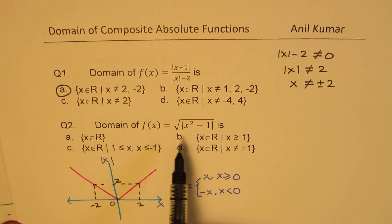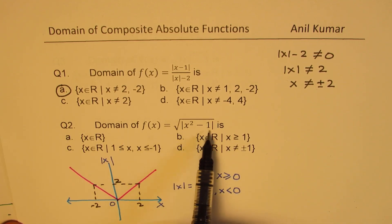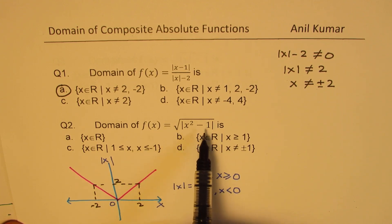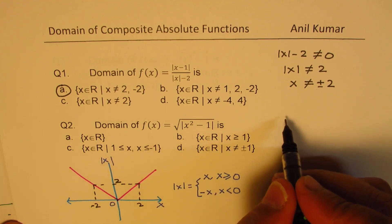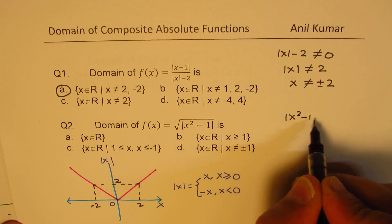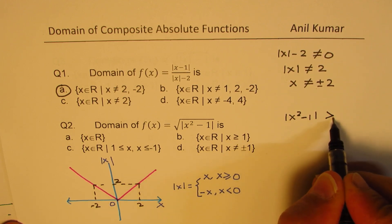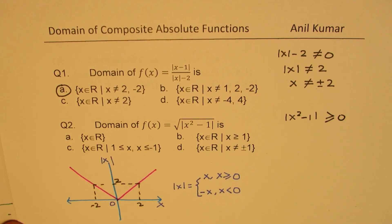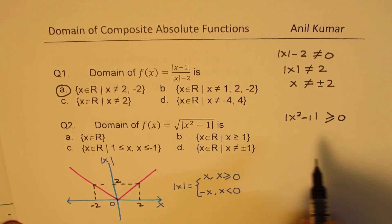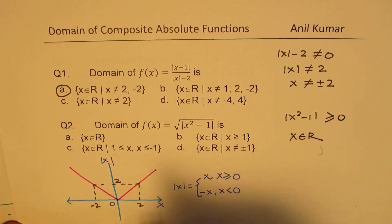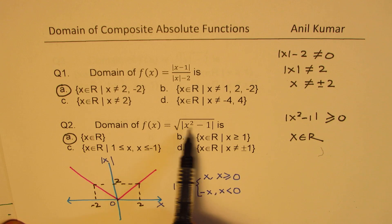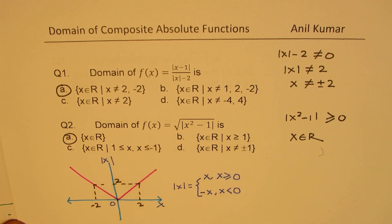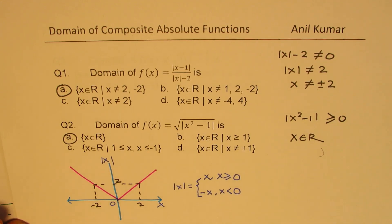Question number 2: whenever you have a square root, the function inside must be greater than or equal to 0. Here, the restriction is that the absolute value of x squared minus 1 should be greater than or equal to 0. This is true for all real numbers, so option A is correct. Whenever you take an absolute value, you always get a non-negative result.